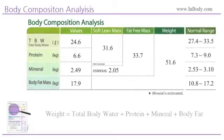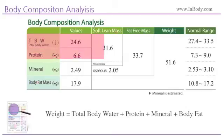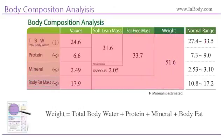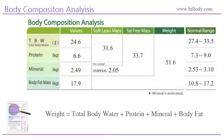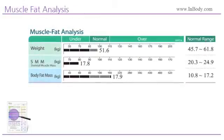Body Composition Analysis. Total Body Water is the sum of intracellular water and extracellular water. Soft lean mass is the sum of total body water, protein and mineral. Bone mineral is not included. Fat free mass is the sum of total body water, protein and mineral. The weight is the sum of body fat mass and fat free mass. Compare your values to the normal range displayed on the right to determine whether the individual's body composition is in the normal range.